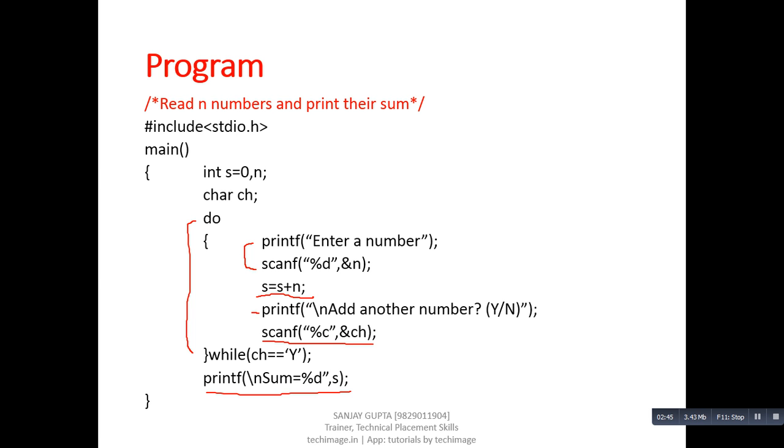With the help of this example, we can understand that at least one time the execution of do-while takes place. If we want to repeat this loop, then after execution of first process we can check a particular condition. If the condition is true, then loop will repeat a second time, otherwise it gets terminated.